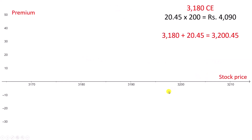Here is a graph. On the x-axis, we have stock price. On the y-axis, we have premium. Below the x-axis, we have negative values for premium. Above the x-axis, we have positive values for premium.